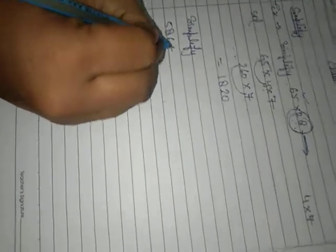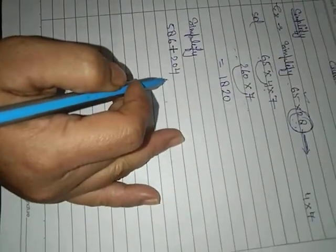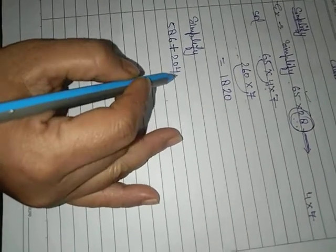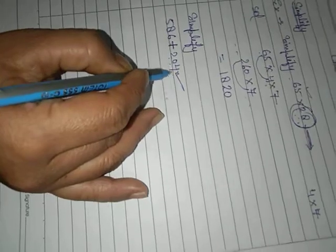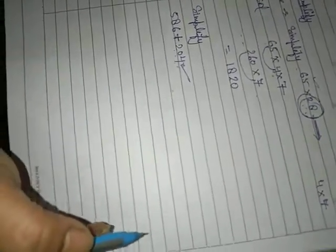Now for classwork, simplify 586 plus 204. This uses the addition property, specifically the commutative property. You will divide 204 into 200 plus 4, then you can solve it easily.